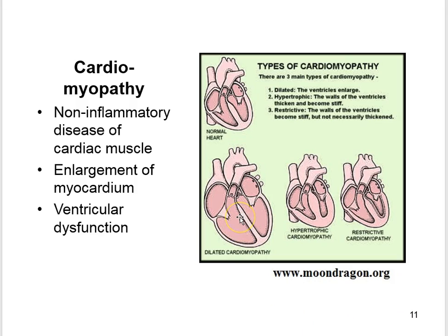In dilated cardiomyopathy, the heart chambers dilate and the myocardium doesn't contract normally. In hypertrophic cardiomyopathy, the myocardium enlarges and ventricular walls — especially the left ventricle — thicken, which can block blood flow out of the ventricle. In restrictive cardiomyopathy, the ventricles are stiff and rigid; scar tissue replaces normal myocardium, so the ventricles can't relax and fill with blood, and over time blood flow to the heart is reduced.